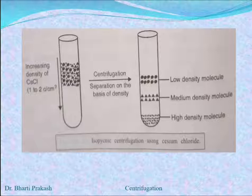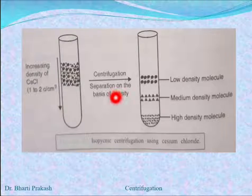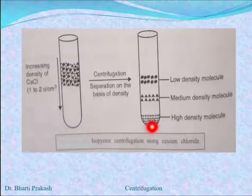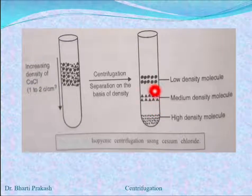Here in this figure we can see the isopicnic centrifugation, and the gradient used here is cesium chloride. We can see again in this tube the increasing density of cesium chloride. Because this is isopicnic centrifugation, the separation is on the basis of density. The highest density molecules sediment at the bottom, then come the medium density molecules, and on top are the low density molecules — they sediment according to their density.